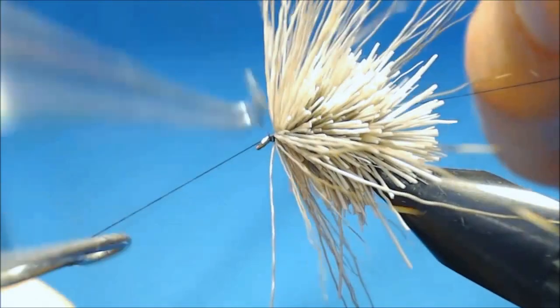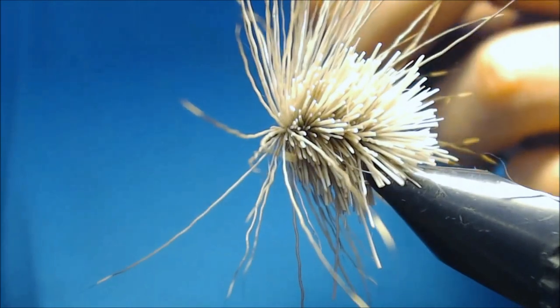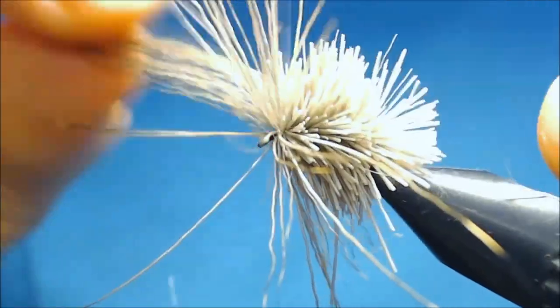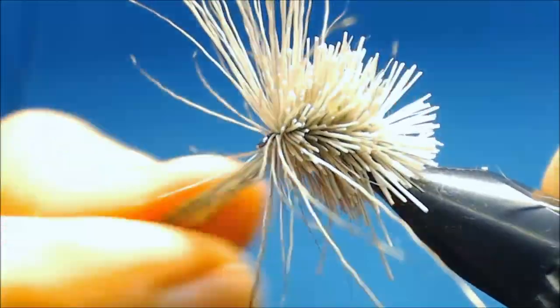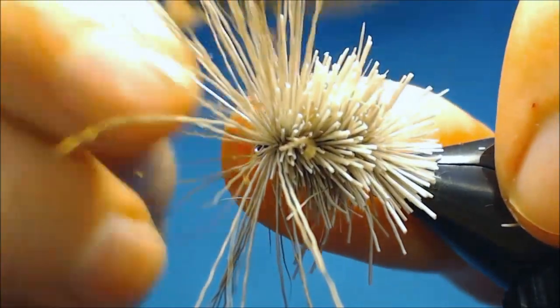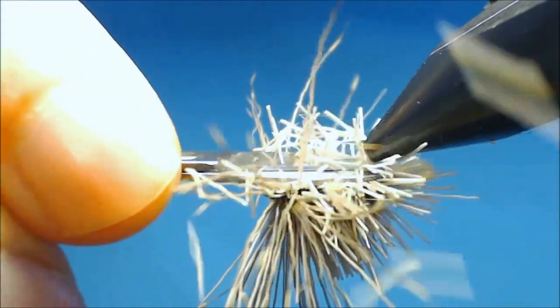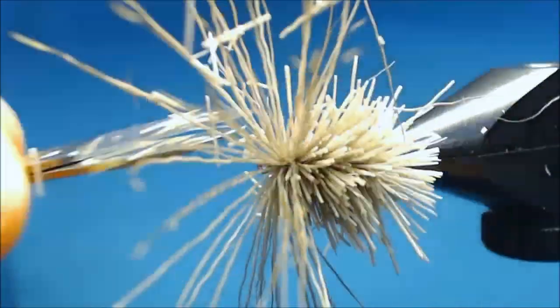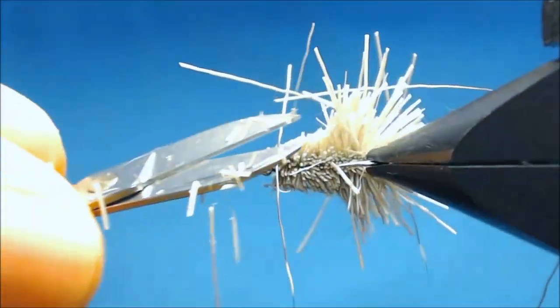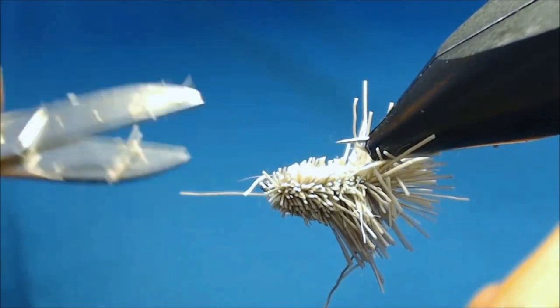This way. Then what we're gonna do is to trim this body into the shape we want. So just whip finish and cut off your thread. Now the fun part with deer hair is to trim it. The first thing to do is to cut the belly flat.